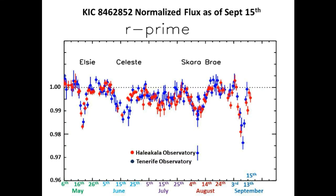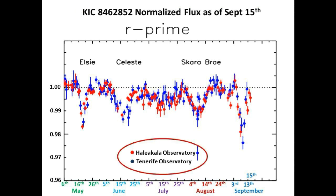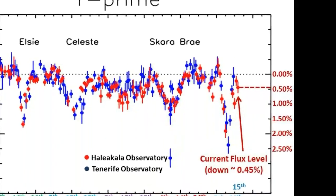This normalized light curve was updated and provided by Tabby's team for today. It was taken in the R-band and has been monitoring the flux of Tabby Star from an observatory in Hawaii and another in Spain. This is today's current flux level circled in red. As you can see, we are at approximately 0.45% below nominal full flux. A couple of days ago, we fully recovered from the latest dimming event, and it seems like we have gone down just a tad to our present flux level.